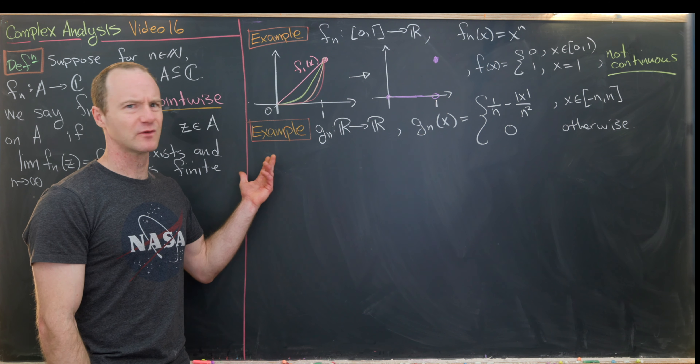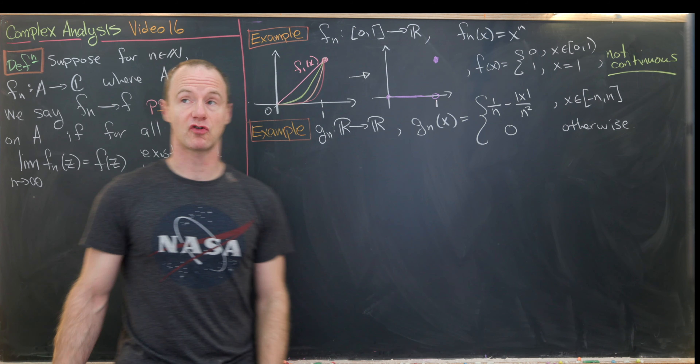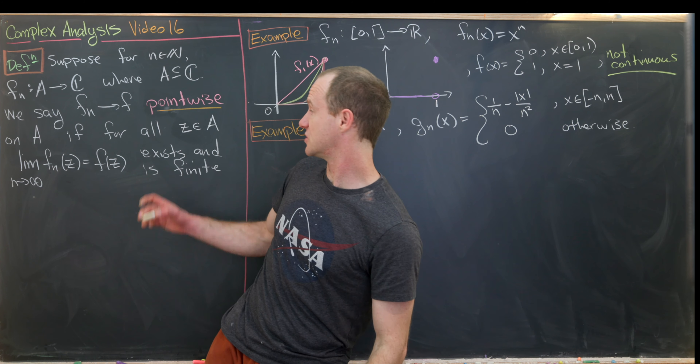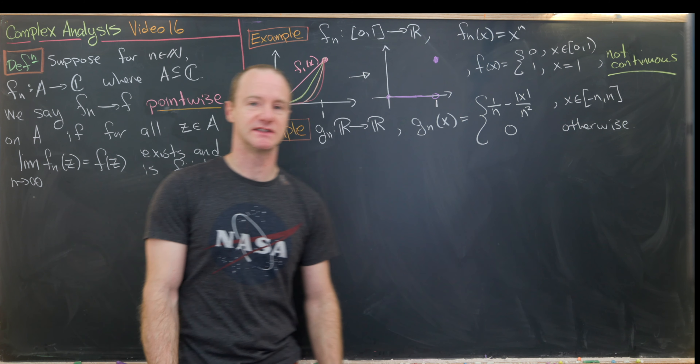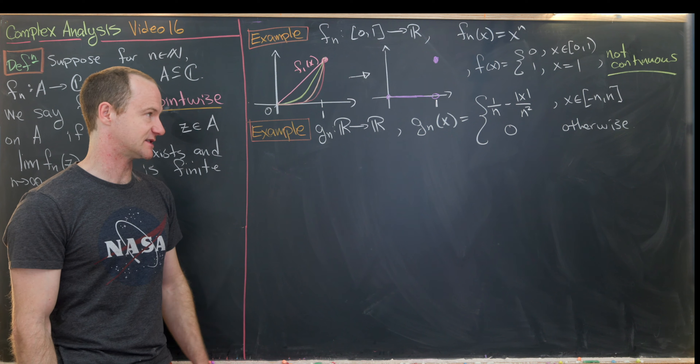The pointwise limit is f(x) = 0 for x in [0,1) and f(1) = 1. So all the f_n's are continuous, but the limit is not — a pointwise limit of continuous functions need not be continuous. This points toward a key issue in complex analysis: a pointwise limit of analytic functions need not be analytic, motivating a stronger definition of convergence.